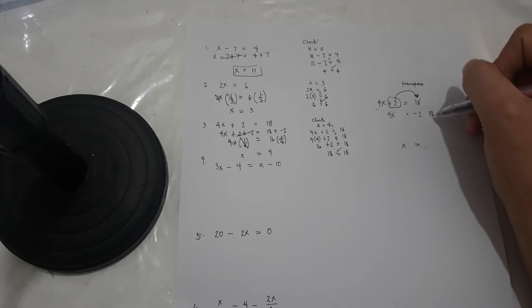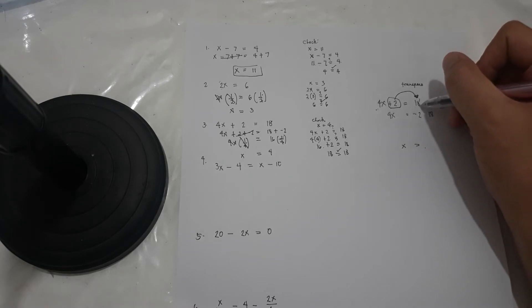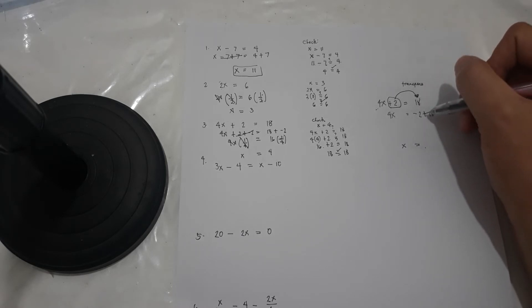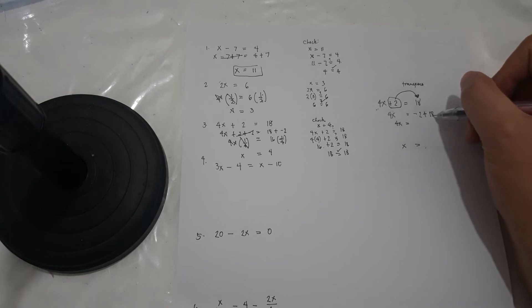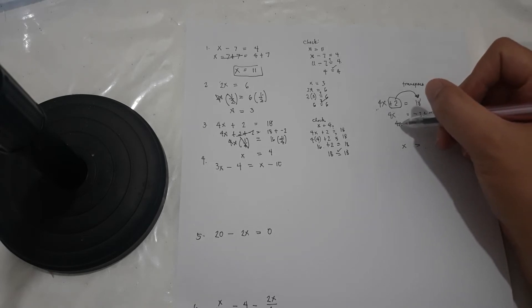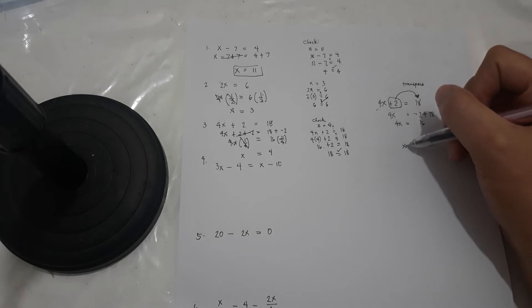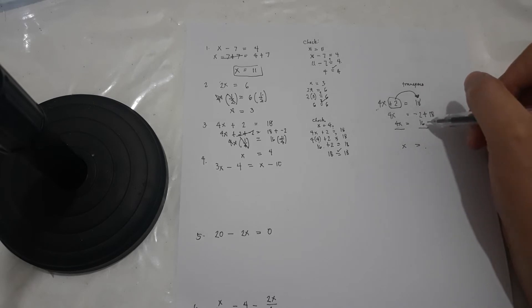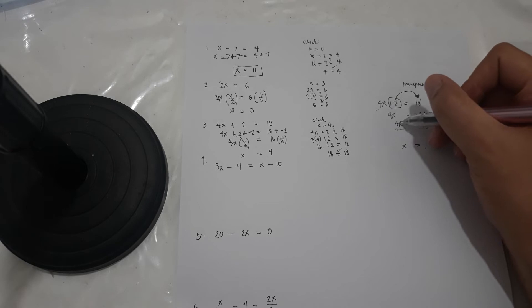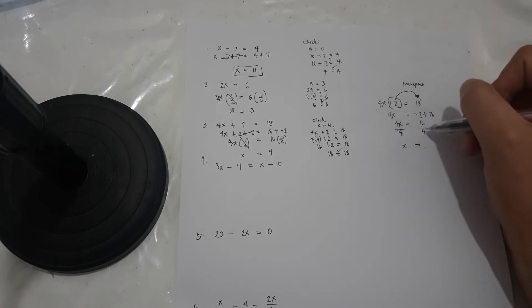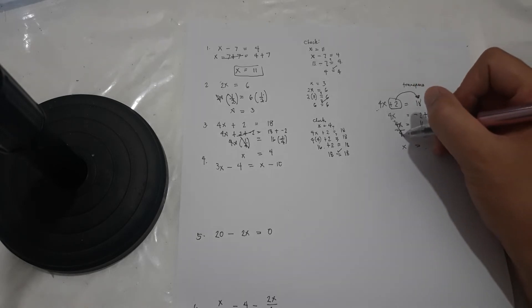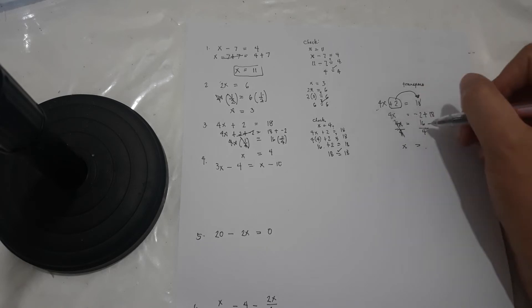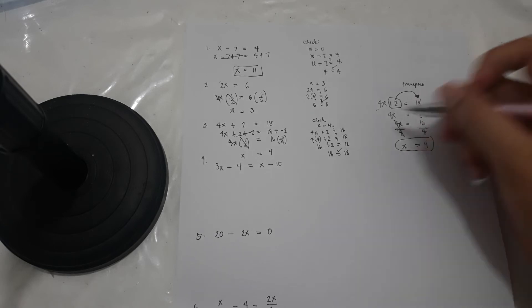So 4x is equal to negative 2 plus 18, that's 16. Next, to eliminate the 4 so only x remains, divide both sides by 4 — the coefficient of x. 4 divided by 4 cancels, leaving x equal to 16 divided by 4, that's 4. We have the same answer.